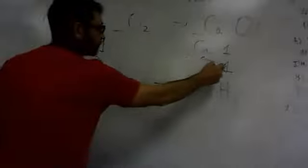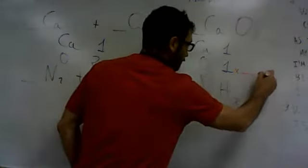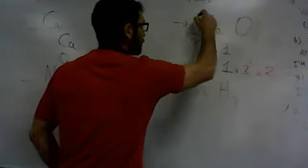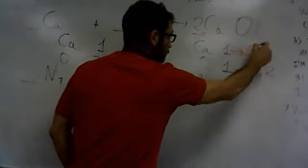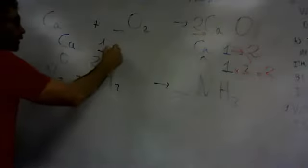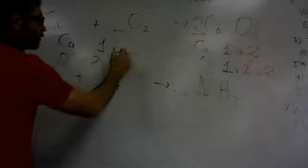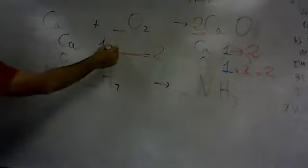Do I put a two here? One times whatever is two, should be two, so I have to write a two here. But when I write a two here, I have to recalculate the calcium. It would be two, so I need a two here. So this number would be two. That's it.